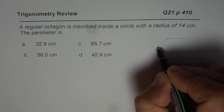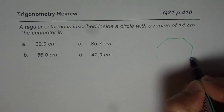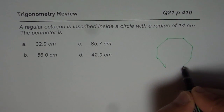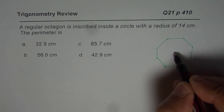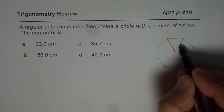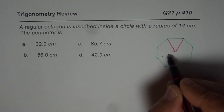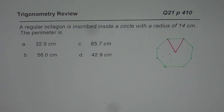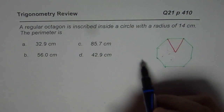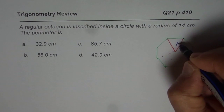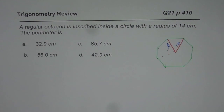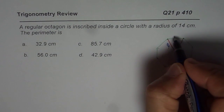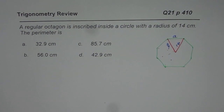So let us say this is our octagon. So we have that regular octagon and let us say that is the triangle we will look into. We need to find the perimeter. You can join all of them also — so approximately you get one section or triangle. You are given that it is inscribed inside a circle, which means the radius is 14. So this length is 14 centimeters. You need to find the perimeter, meaning you need to find each side and there are 8 of these sides.